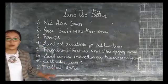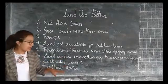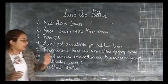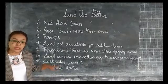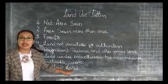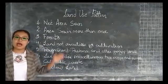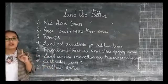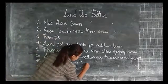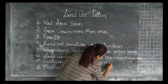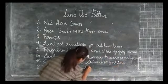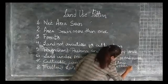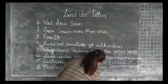The last category is fallow land, which includes all the land that was used for cultivation but is temporarily out of cultivation. Fallow land is of two types: current fallow, and fallow other than current fallow.